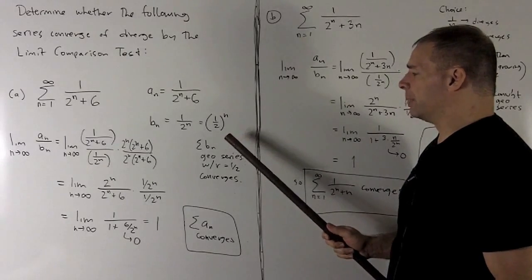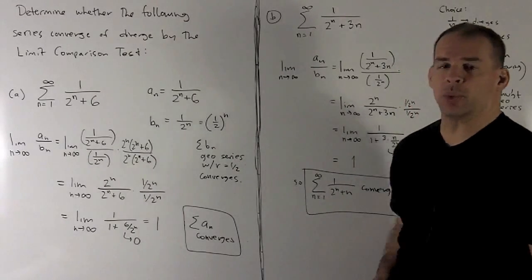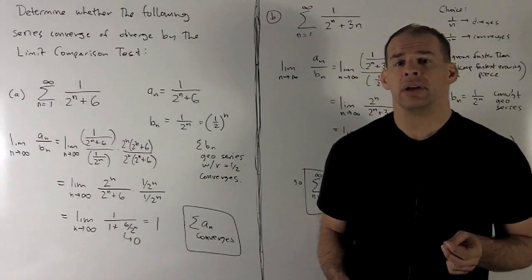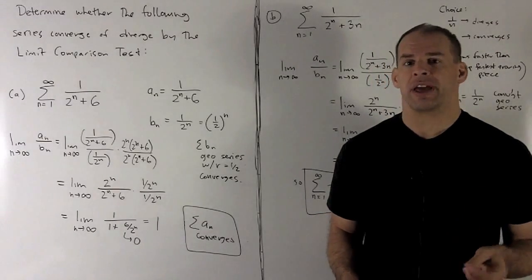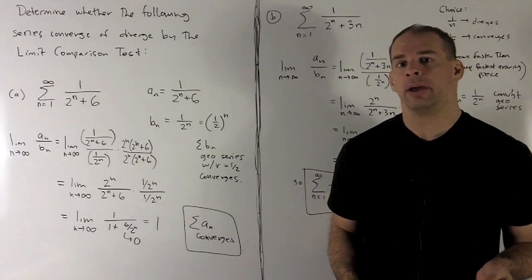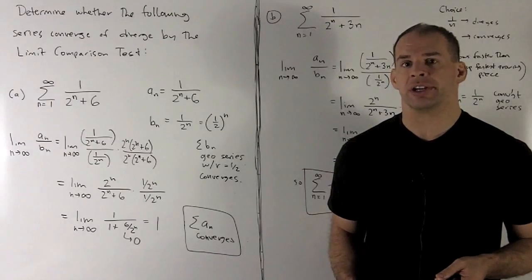Our series is going to be a geometric series with its r equal to 1 half, which means it converges. Absolute value of r is less than 1, which means convergent geometric series.